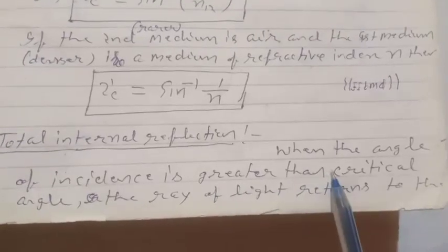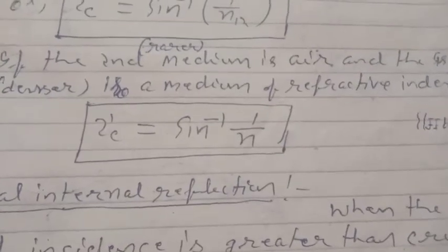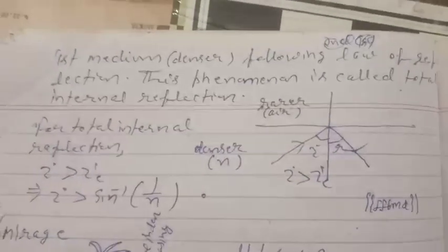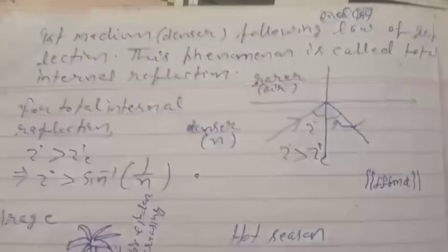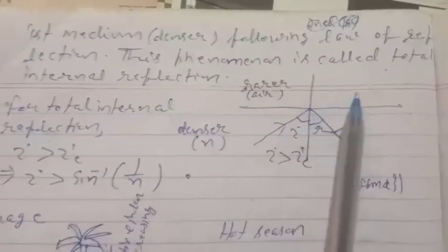Total Internal Reflection: When the angle of incidence is greater than the critical angle, the ray of light returns to the first medium following the law of reflection. This phenomenon is called total internal reflection.